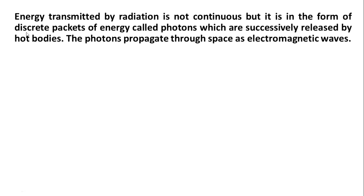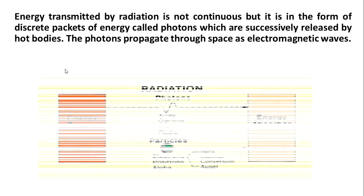How does the heat transfer occur? Energy transmitted by radiation is not continuous but is in the form of discrete packets of energy called photons, which are successively released by hot bodies. The photons propagate through space as electromagnetic waves.